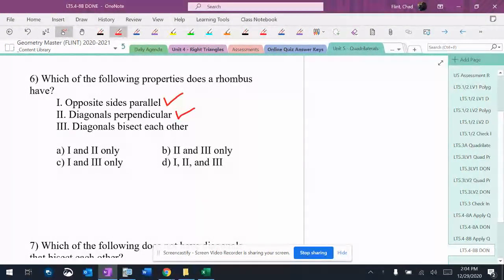Then it also says the diagonals bisect each other. That is true about a parallelogram, so that means a rhombus also has it. So all three of those properties are true.